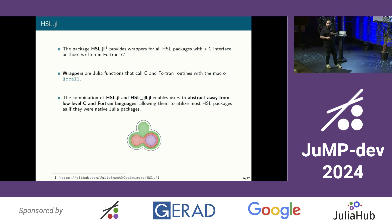For users that don't want to directly use an optimization solver developed in other languages and want to implement their own linear solver, you can use HSL.jl, which is a Julia interface that allows you to use all the routines implemented in Fortran and C easily in Julia. So if you want to implement your own solver in Julia, you can directly have access to these highly optimized routines for solving linear systems.